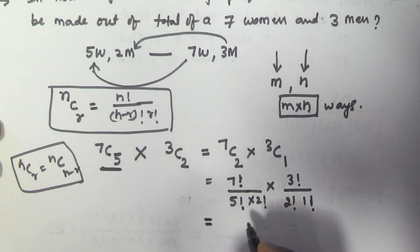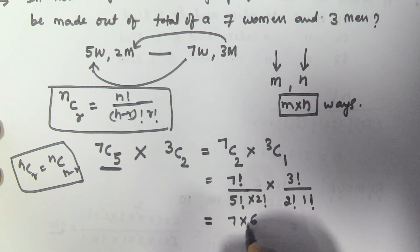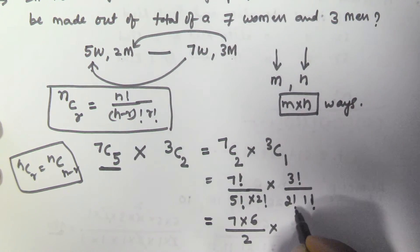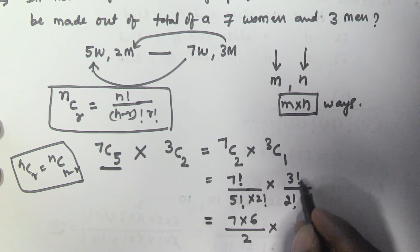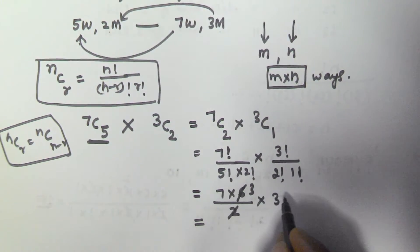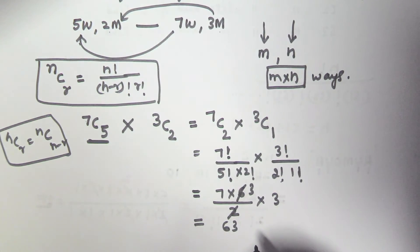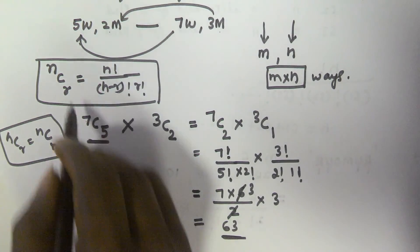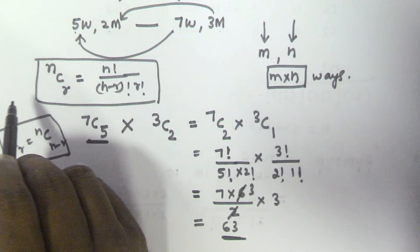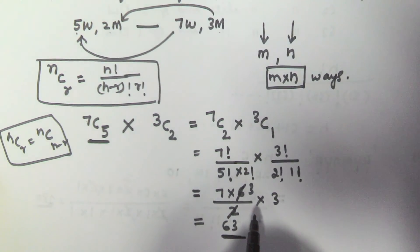Now simplifying: 7 factorial over 5 factorial cancels to give 7 into 6, and 2 factorial is 2. For 3C1: 3 factorial is 3 into 2 factorial, so the 2 factorials cancel giving 3. So we have (7 into 6 divided by 2) into 3, which equals 21 into 3, giving 63. So in 63 ways we can select 5 women out of 7 women and 2 men out of 3 men.